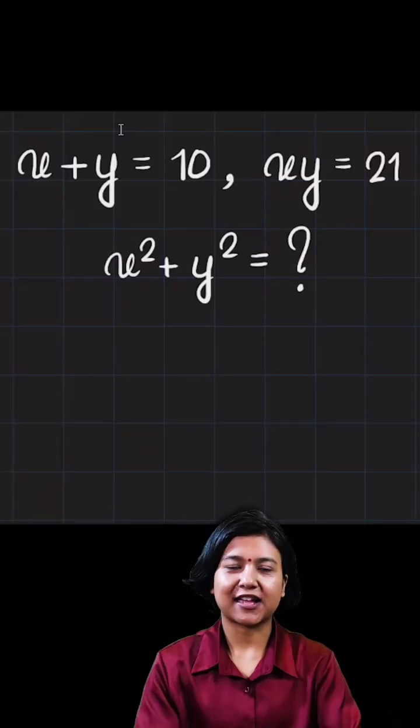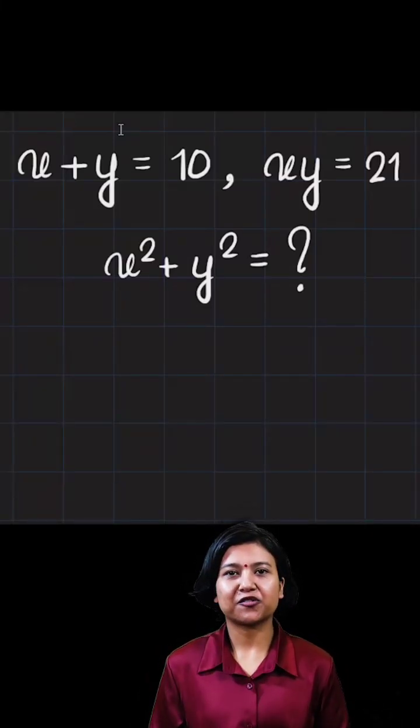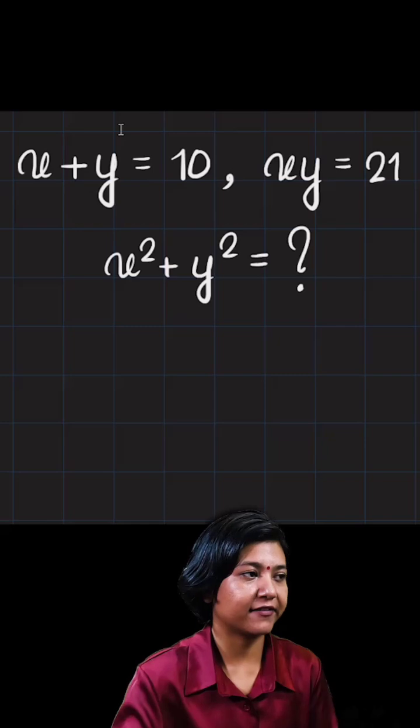If you have the sum of two values and their product, how exactly can you find the sum of their squares? Let's have a look.